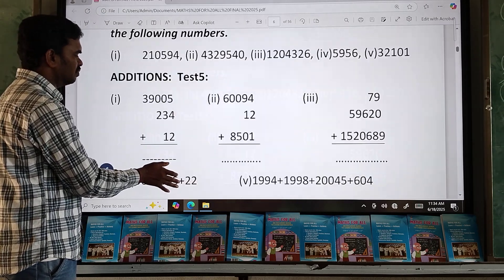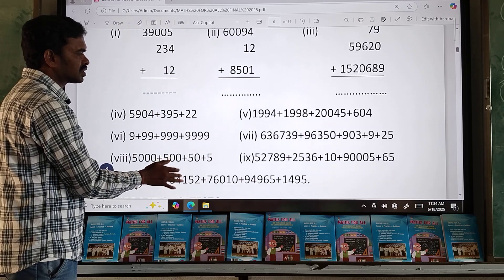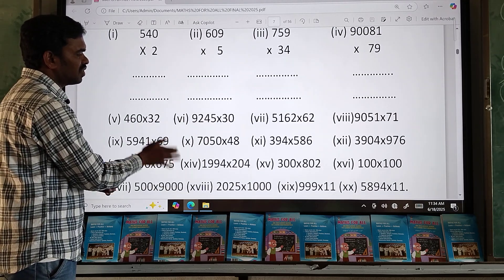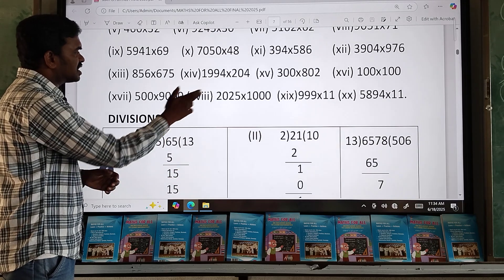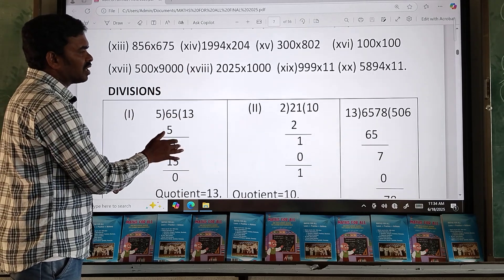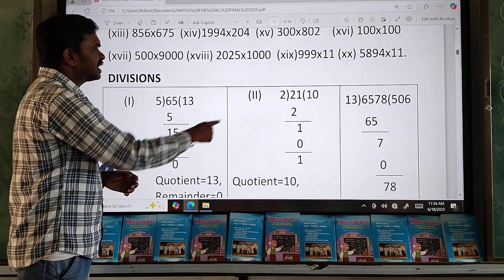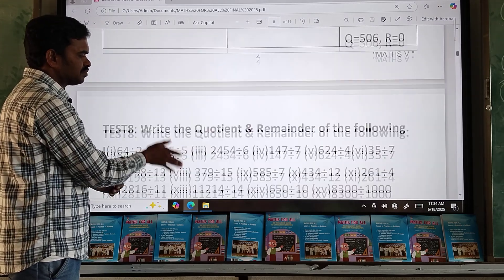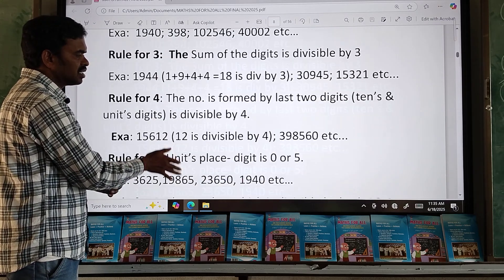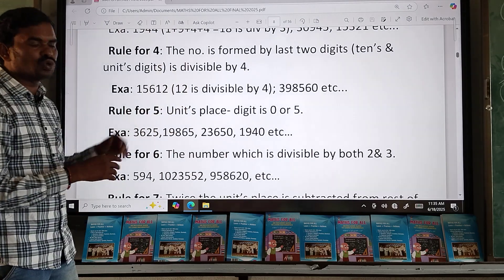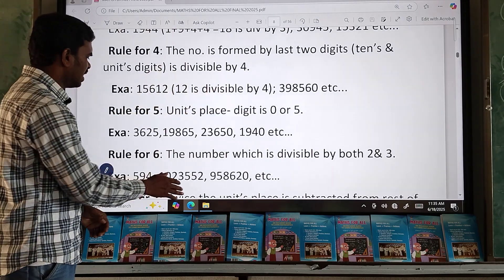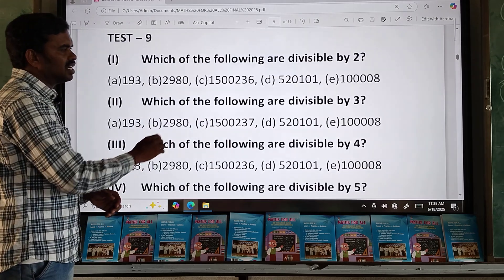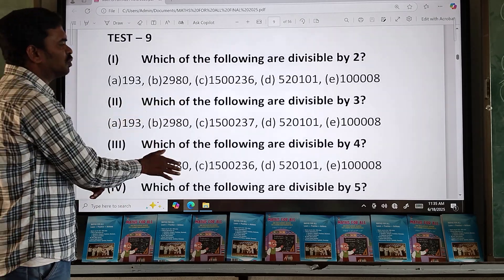Some questions to you. Face value, place value, additions, subtractions, multiplications, divisions. I have done three problems and you have to do the remaining problems. And divisibility rules: divisibility rules for 2, for 3, for 4, for 5, 6, 7, 8, 9, 10, and 11. Next, questions based on divisibility rules.